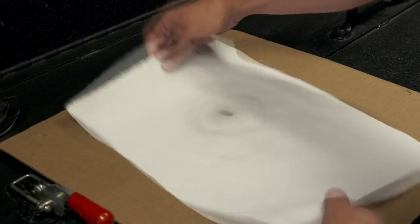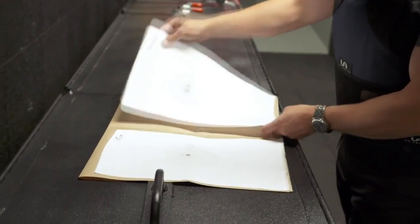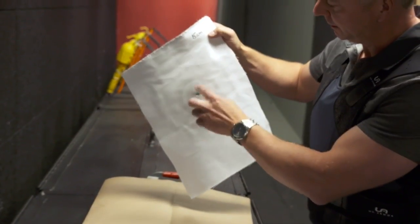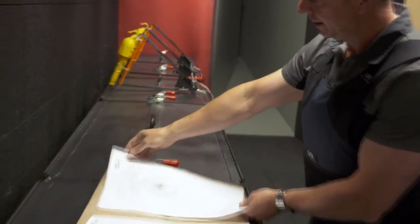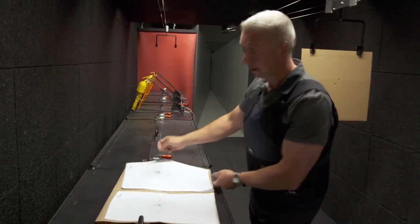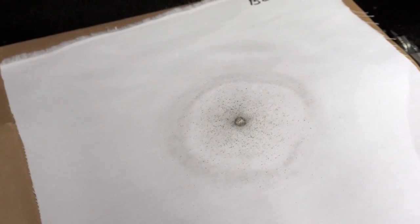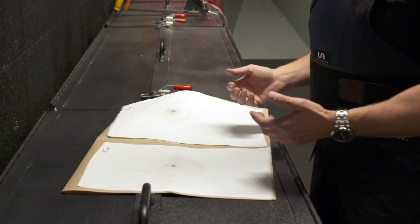In handguns, short barrel firearms, not all of the gunpowder has a chance to burn before it exits the barrel. So what you're seeing as little specks here is partially burned gunpowder. There's also some residues on here that are invisible to the naked eye as well. So we have chemical methods that we use to visualize this.